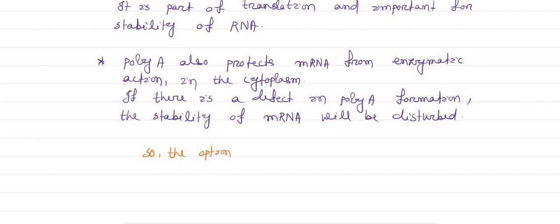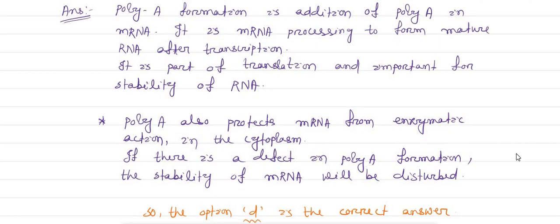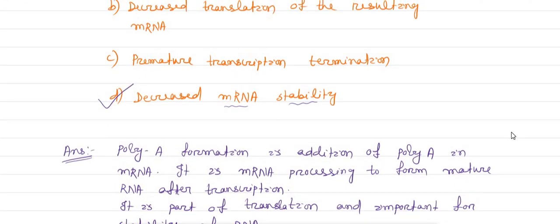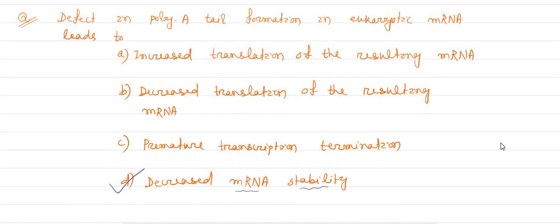Hence, stability will be hampered, so option D is the correct answer, that is disturbance in stability of RNA. This is all about the explanation along with the answer of this question. You can see it, and this is the question I already marked the correct answer. Thank you for watching, bye bye.